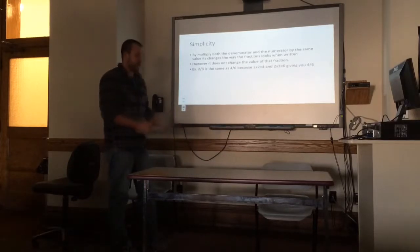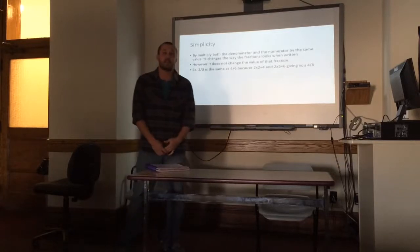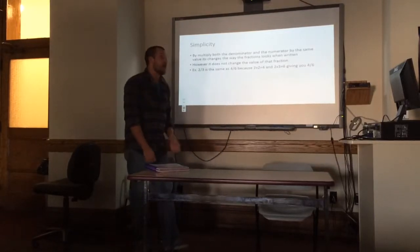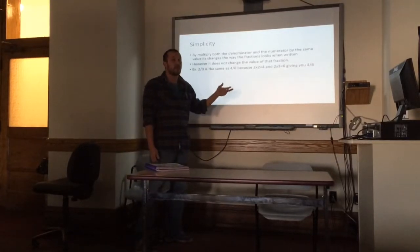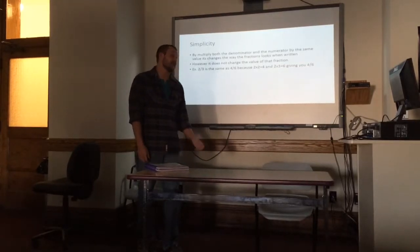The way we go about getting that fraction is, as you saw there, we took two-thirds and we multiplied the denominator and the numerator by two each. So two times two is four, and three times two is six. That's why two-thirds is actually equal to four-sixths.